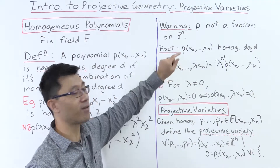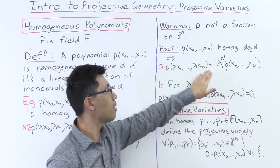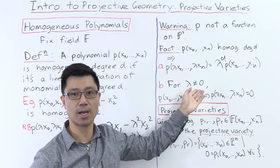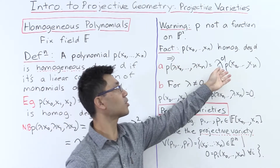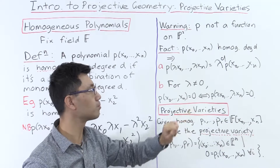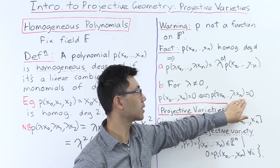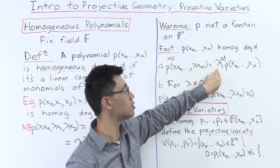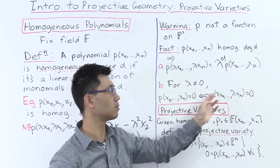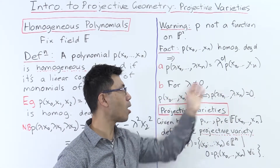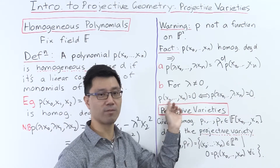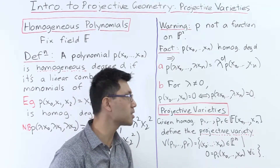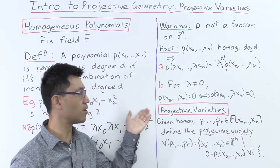This tells us something very important for when we define projective varieties. When we look at homogeneous coordinates, we can scale by any non-zero scalar lambda. Instead of asking for all possible values, let's ask: when is it zero? Well, p evaluated at lambda times the coordinates is zero precisely when the original polynomial is zero, because you can pull out lambda to the d and lambda is non-zero. So even though the actual values of this polynomial depend on the choice of scalar multiple, the fact of whether it's zero or not does not depend on that, as long as the scalar is non-zero.